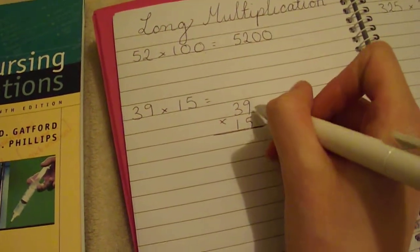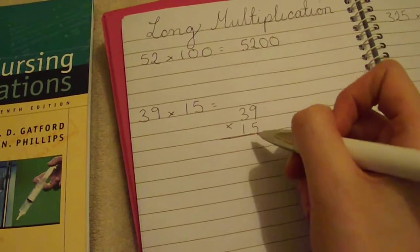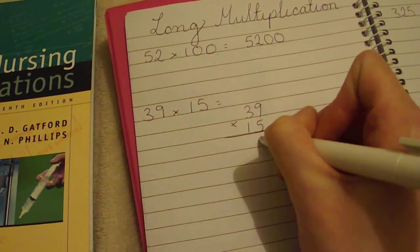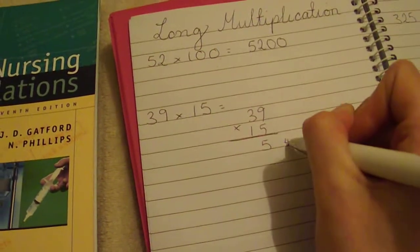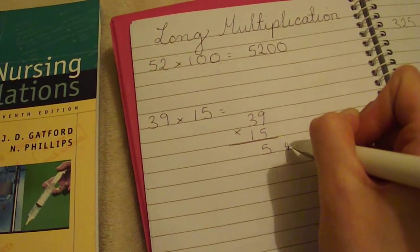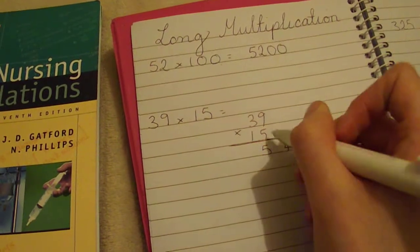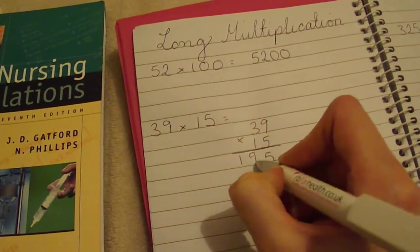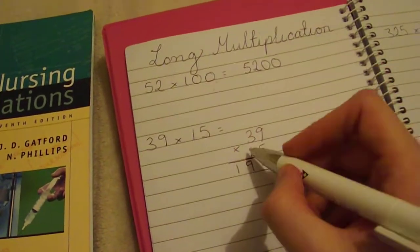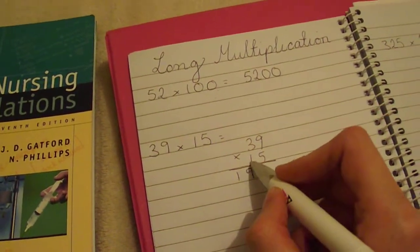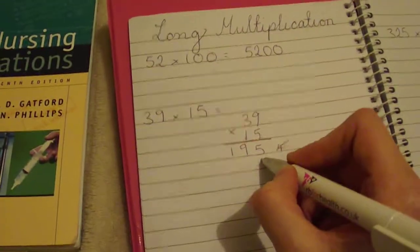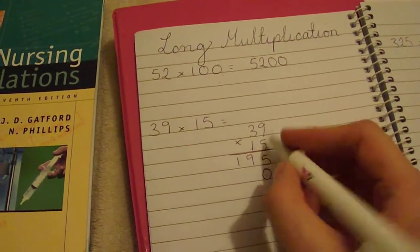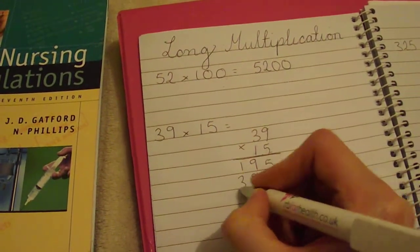So you've got your 5 times 9, which is 45. So you carry your 4, add your 5. Then your 5 times 3, which is 15, and you're adding this 4 here, which is 19. You're then doing 1 times 9, but because you're doing the units here and not the tens, you've got to add a 0 because you're not doing this number now. You're doing 1 times 9, which is 9, and 1 times 3, which is 3.